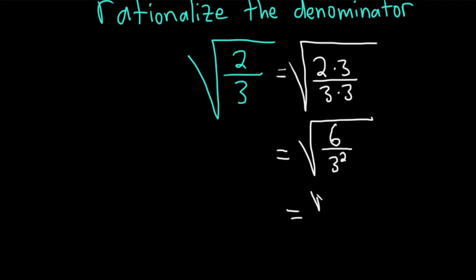Now we can write this as √6 over √(3²). And the square root of 3 squared is 3. So this is √6 over 3, and that would be the final answer.